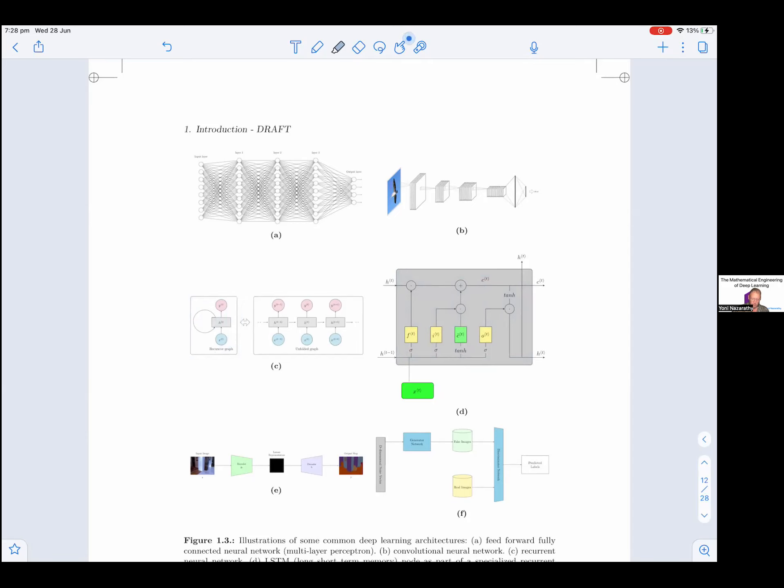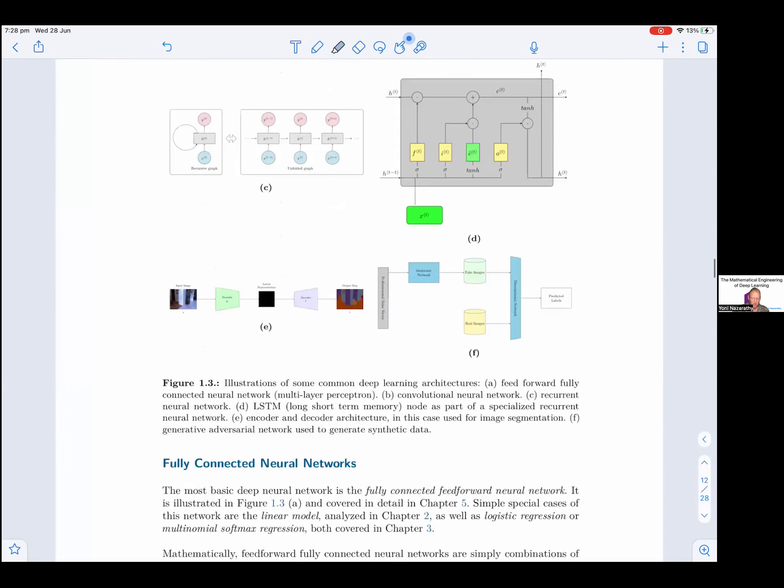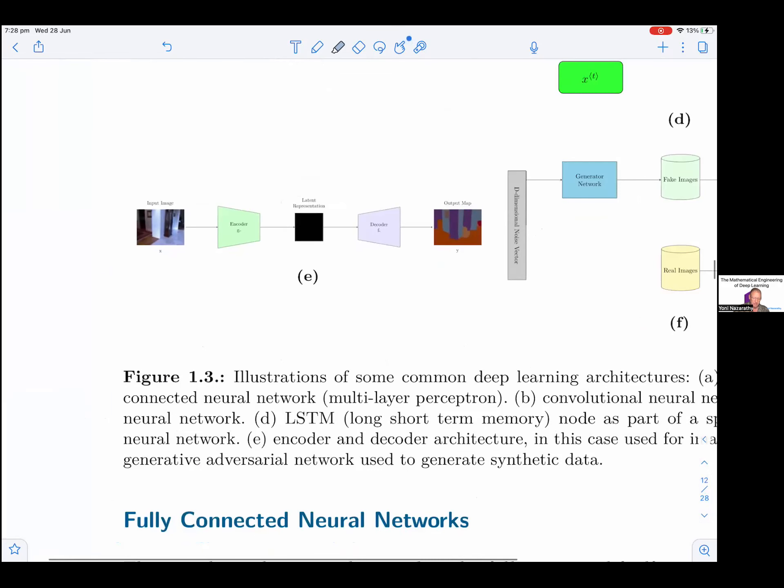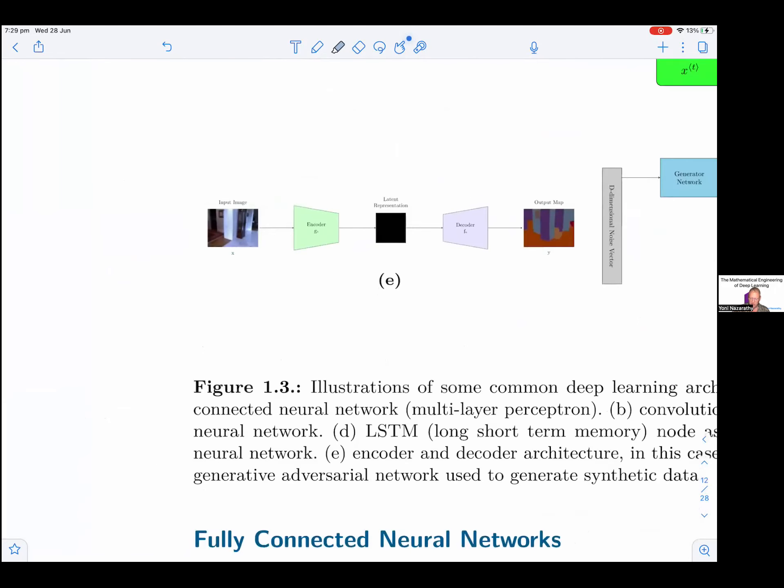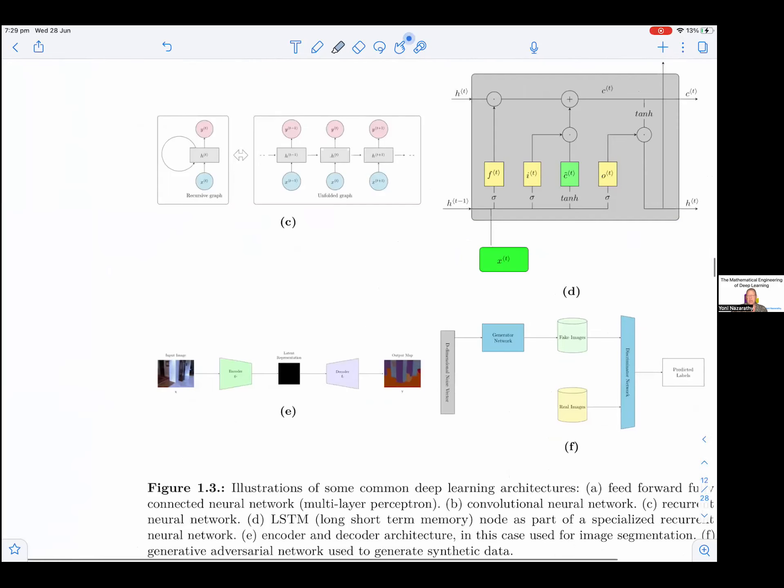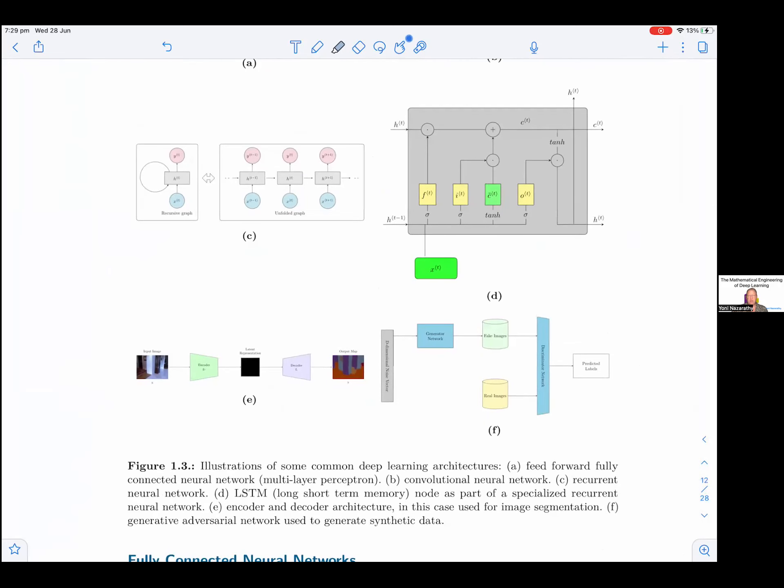In E, you see one form of an encoder-decoder architecture where you have, in this case, an input image and the output has semantic segmentation of that image. So whatever was a door in that image is colored in one color, et cetera, for floor, for a cupboard, for other things. And in F, you see the generative adversarial network architecture.